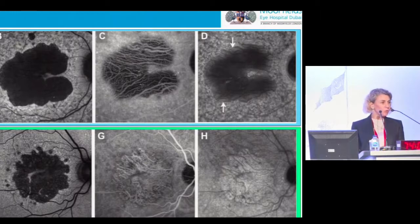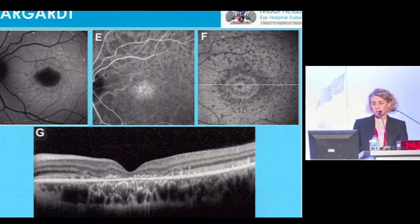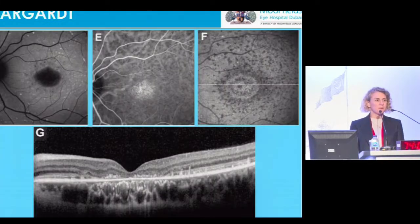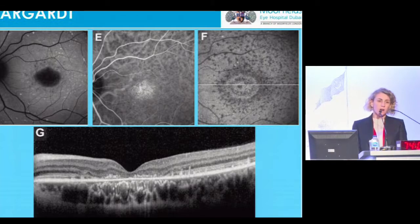So dark atrophy it is — if you do an ICG and you see dark atrophy, it's Stargardt. End of story? Well, not really, in the sense that does this happen all the time? There is some overlap.